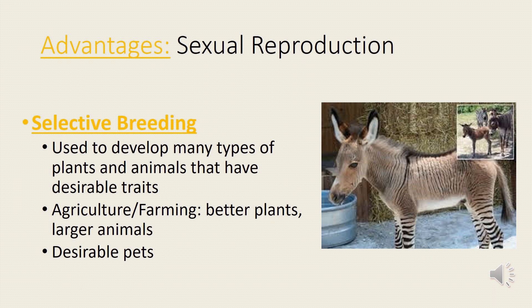Examples include agricultural farming, better plants, larger animals, and desirable pets.